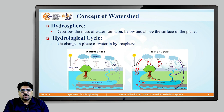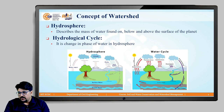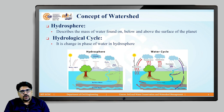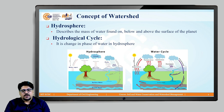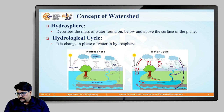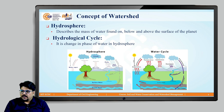Hydrosphere basically refers to the total amount of water which is available on earth. It may be in the forms of oceans, rivers, lakes, even groundwater, and water which is available in the atmosphere. So it is the mass of water found on, below, and above the surface of the planet. This particular hydrosphere plays a very crucial role in maintaining the balance of various lives on earth. The water cycle, which involves the movement of water between the atmosphere, land, and oceans, is a key component of the hydrosphere and for maintaining the earth's overall balance.